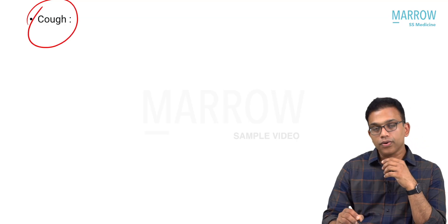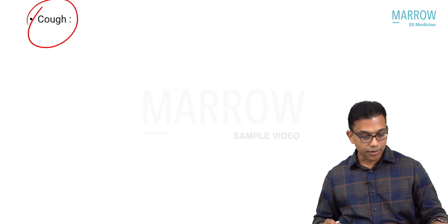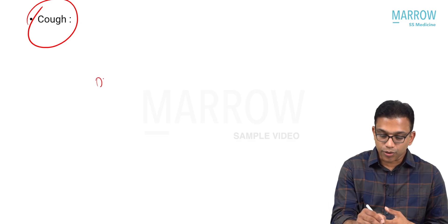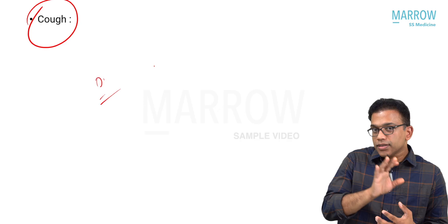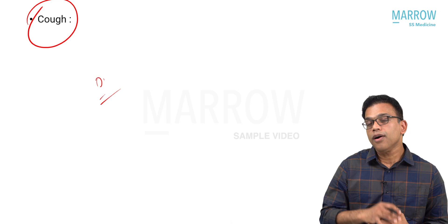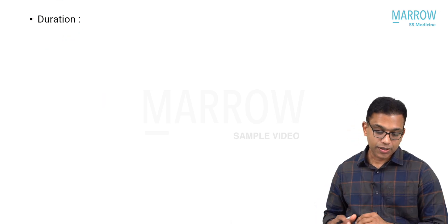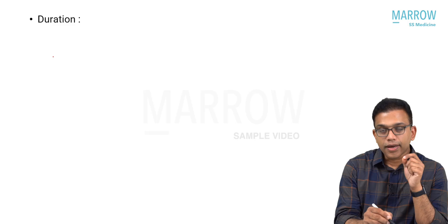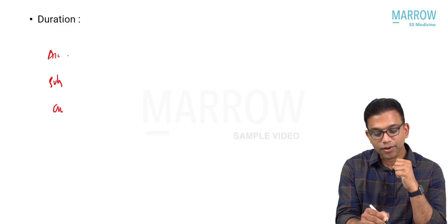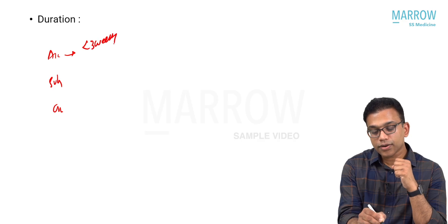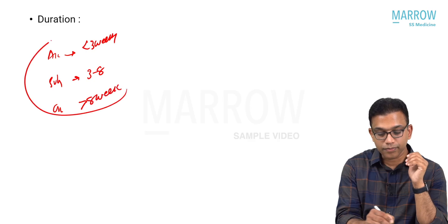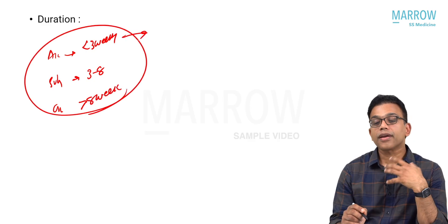Cough is another cardinal symptom in pulmonary practice. As with other symptoms, the duration, type — dry or productive — any postural variation, and associated hemoptysis must all be elicited. Duration categories are: acute cough (less than 3 weeks), subacute cough (3–8 weeks), and chronic cough (more than 8 weeks).